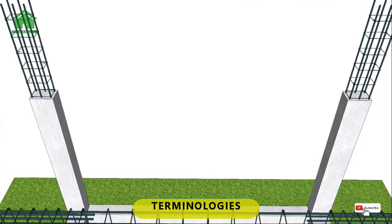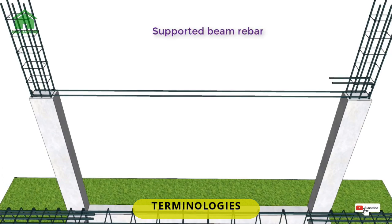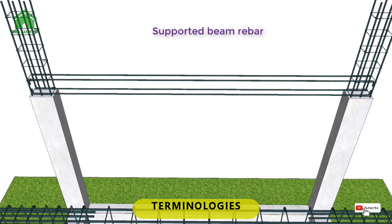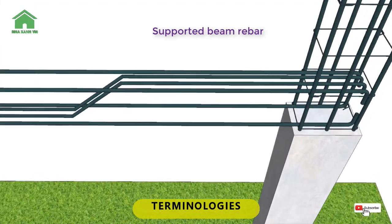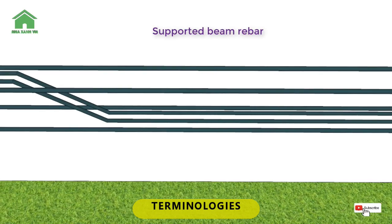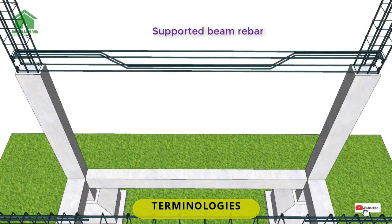12. Bottom bars — longitudinal bars that are subjected to a positive moment. 13. Top bars — longitudinal bars that are subjected to a negative moment. 14. Bent bars — bottom bars that are bent up 30 to 45 degrees at the point of inflection, extending towards the support of the adjacent span. 15. Stirrup — vertical ties that surround the longitudinal reinforcing bars of a beam.